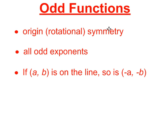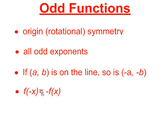So odd functions have rotational symmetry about the origin, their equations have only odd exponents on the variables, and if the point (A, B) is on the line, then (-A, -B) must also be on the line. The final characteristic we're going to look at is this one: if I put in a negative x for x in the function, I should get back the opposite of that function — a negative f(x).